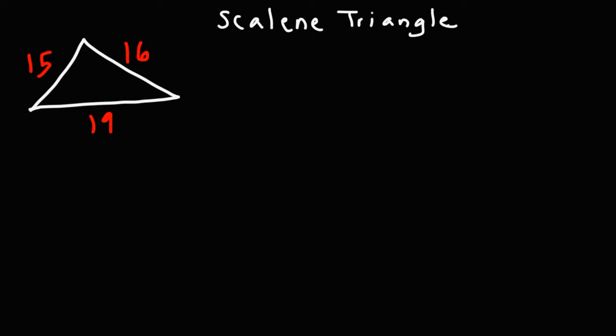An isosceles triangle is when you have two sides that have the same length. And for an equilateral triangle, that's when all three sides have the same length. But because all the sides are different, we have a scalene triangle.